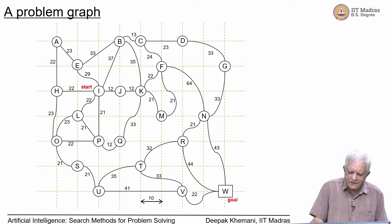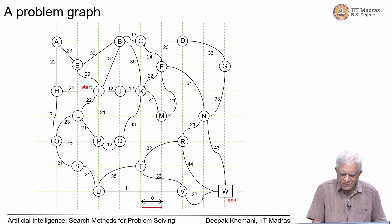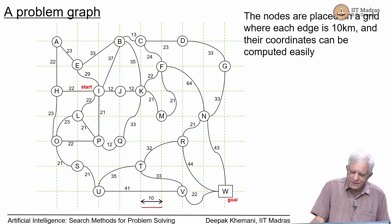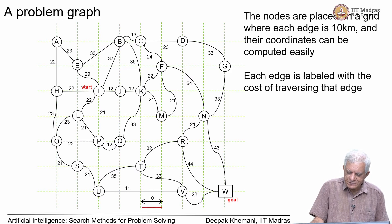Here is a small problem graph. There is a grid of 10 units each, and the nodes are placed on intersections of these grid points. We can compute the coordinates quite easily manually because the heuristic function depends on the coordinates. Each edge is labeled with the cost of traversing that particular edge.